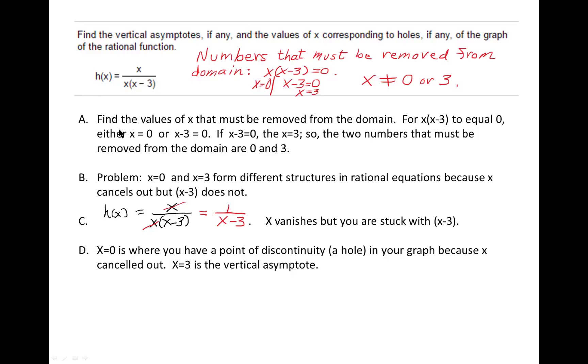However, x equals 0 and x equals 3 form different structures in our rational function. The reason is that the x that gives us x equals 0 cancels out, and what we're left with is 1 over (x minus 3). We're stuck with (x minus 3), there's no way to get rid of it.